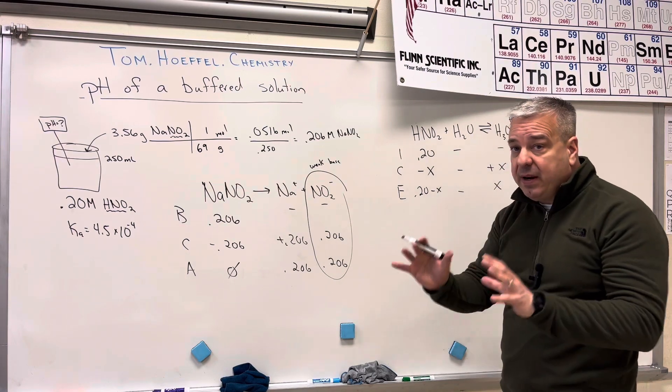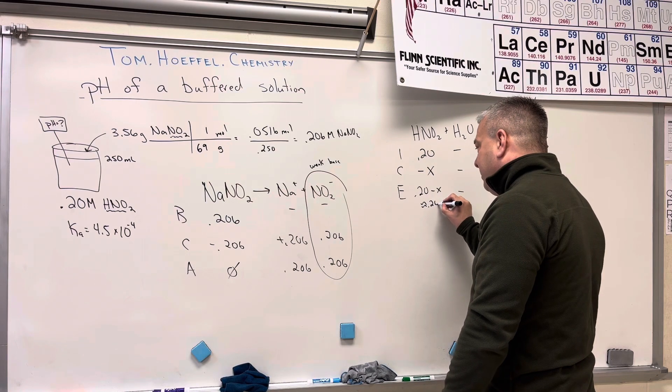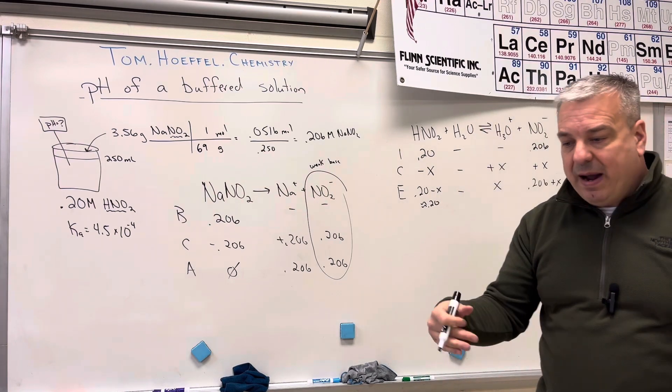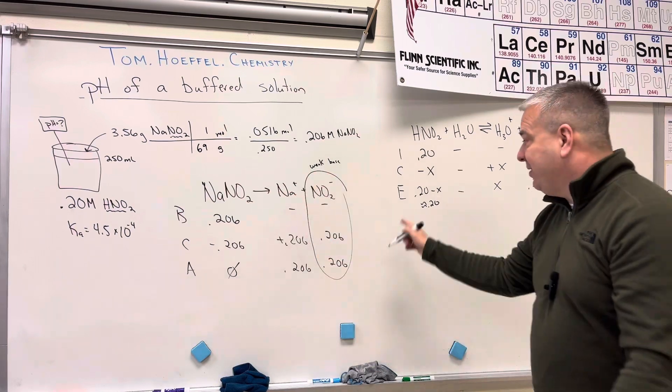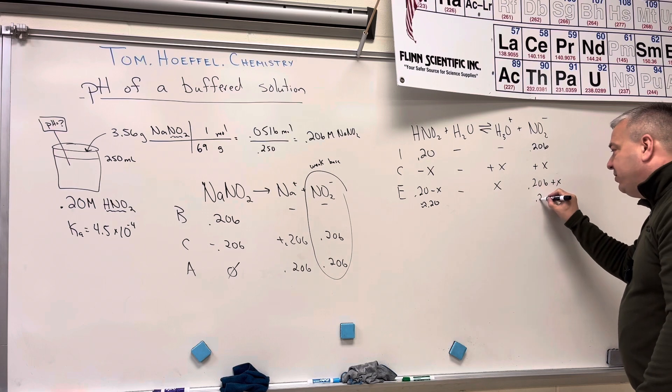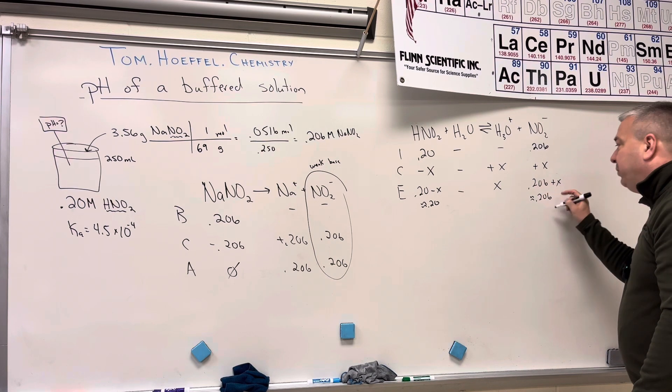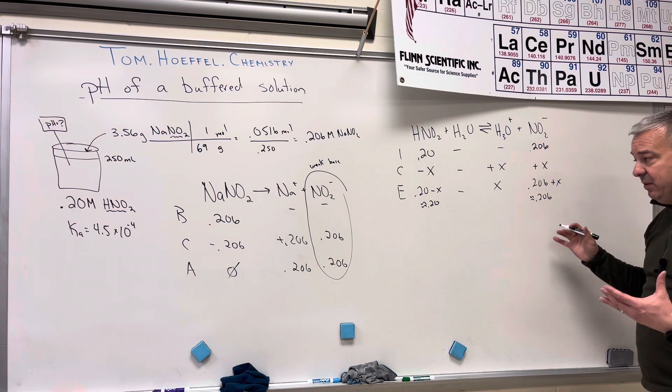So 0.2 minus a really small number, we are saying, is approximately the same number. Because 0.20 minus a number like 0.00001 is still going to be approximately 0.20. The same thing over here, 0.206 plus a small X is going to be approximately 0.206.